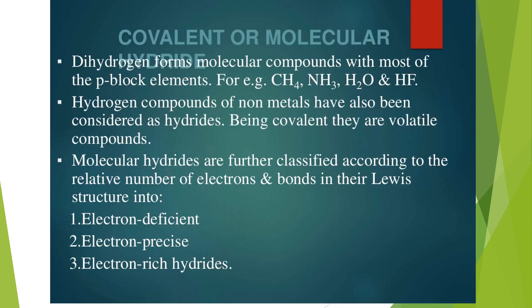Covalent or molecular hydrides: Hydrogen forms molecular compounds with most of the p-block elements, for example CH4, NH3, H2O, and HF. Hydrogen compounds of non-metals have also been considered as hydrides. Being covalent, they are volatile compounds. Molecular hydrides are further classified according to the relative number of electrons and bonds in their Lewis structure into electron-deficient, electron-precise, and electron-rich hydrides.